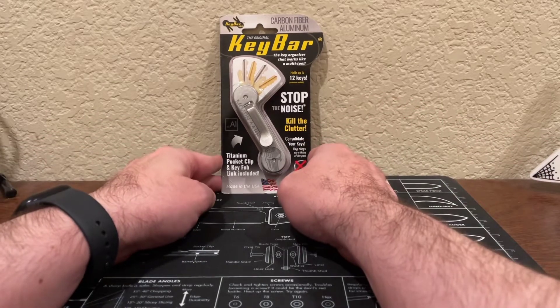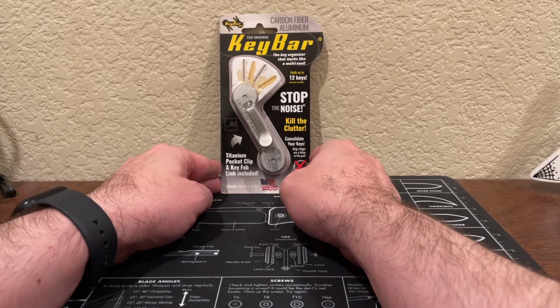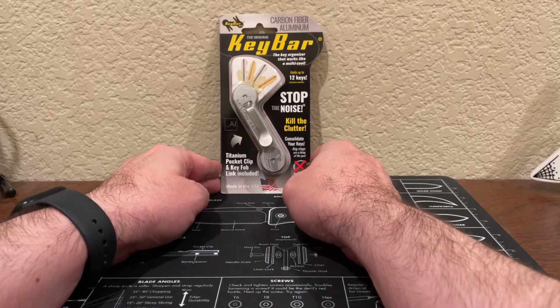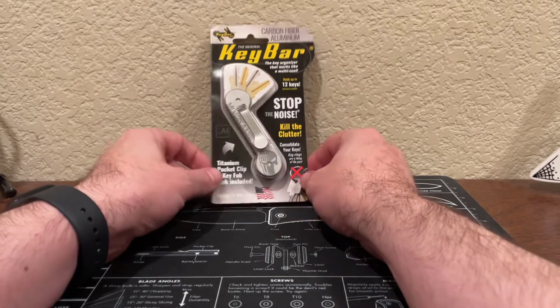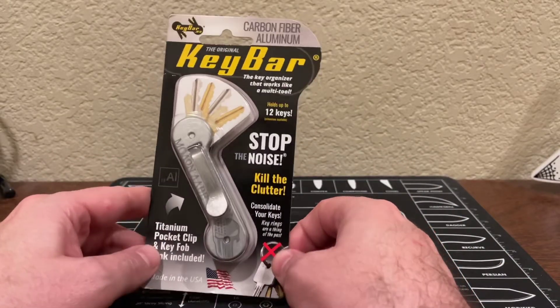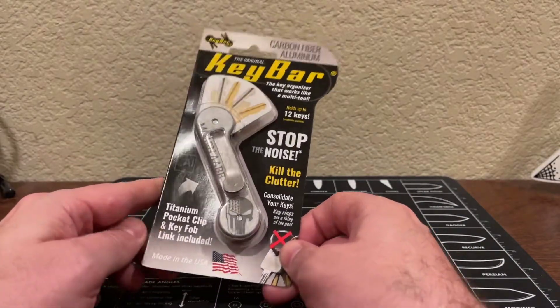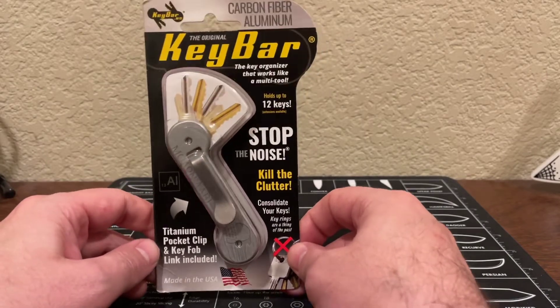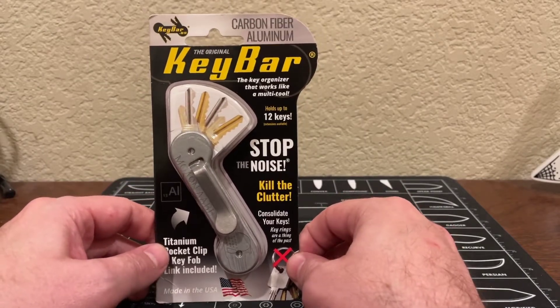Hello and welcome to another episode of King on Things. I'm your host Robert and today we're going to be taking a look at this KeyBar carbon fiber and aluminum Molon Labe key organizer. So without further ado let's get into the unboxing.